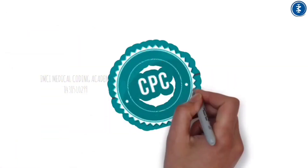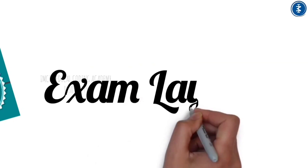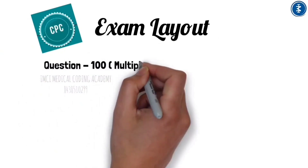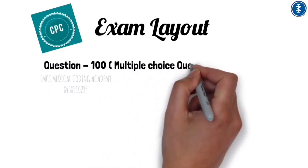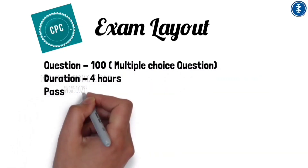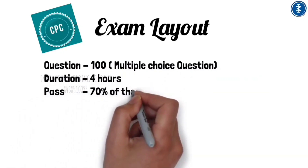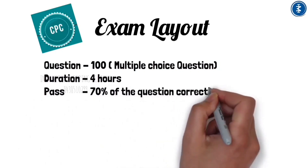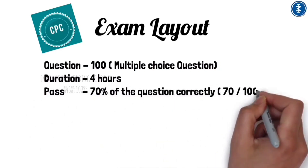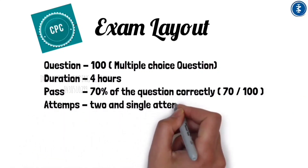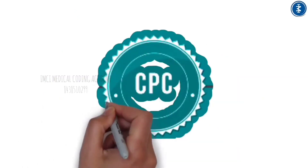The CPC exam layout consists of 100 multiple-choice questions with a total duration of four hours. To pass, a score of 70% is required — meaning at least 70 out of 100 questions must be answered correctly. Candidates are allowed a total of two attempts.